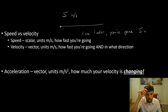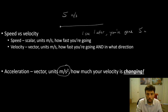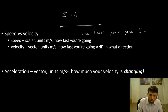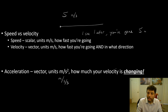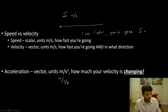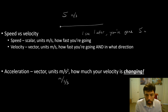The last thing is acceleration. The units for acceleration look a bit strange at first — they are meters per second squared, which you can also write as meters per second per second. Acceleration is a vector quantity, so it has direction. It means how much our velocity is changing — whether you're speeding up, slowing down, or changing direction.